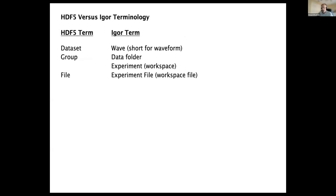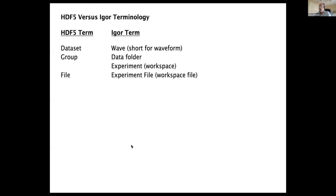Before I start, I want to clarify some terminology. In Igor, we use the term wave, which is short for waveform, and that is about the same as dataset in HDF5. We use the term data folder, which is similar to group in HDF5. And we use the term experiment, which means basically workspace or project. An experiment file is a file containing all of the data for a given workspace.